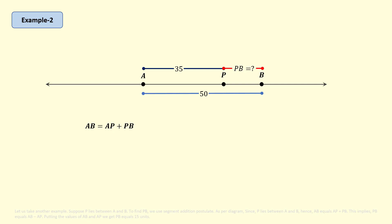Now putting the values of AB and AP, we get PB equals 15 units.